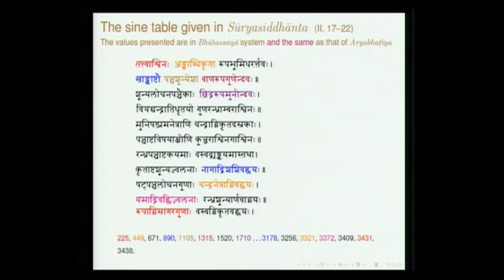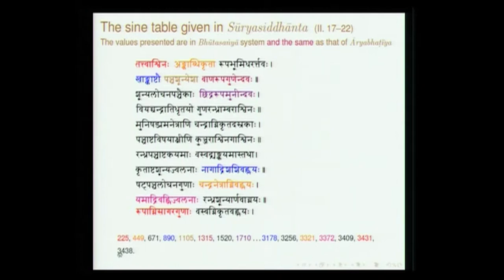For instance, the last value: 'Vasu Vagni Krita Vanhaya' — Vasu refers to 8, Agni refers to 3, Krita refers to 4, Vanhi again refers to 3 — so this table is identical with the table presented by Aryabhata, but it presents Pindajyas (accumulated sines), whereas Aryabhata gave the Khandajyas (sine differences). How do we obtain intermediate sine values?